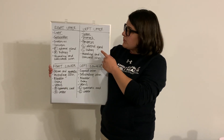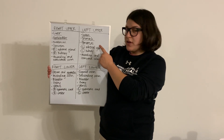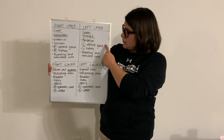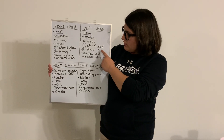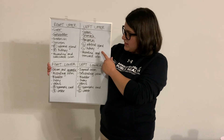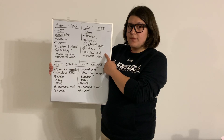In the left upper quadrant we're going to have the spleen and stomach, another portion of the pancreas, left adrenal gland, left kidney, and another portion of the ascending and transverse colon.